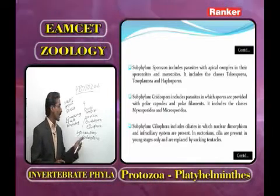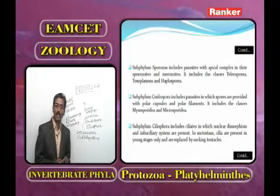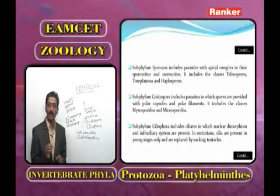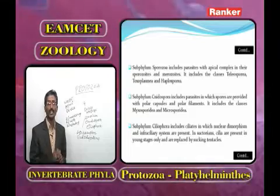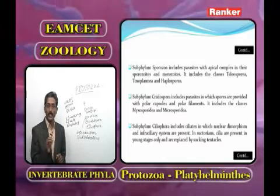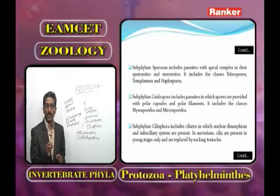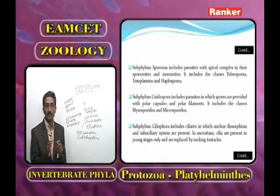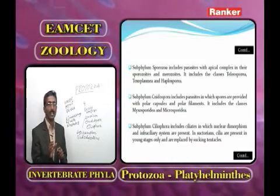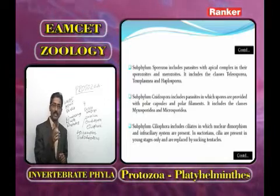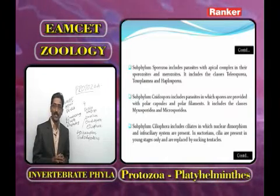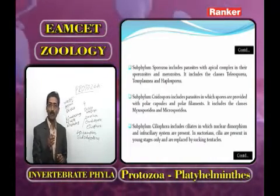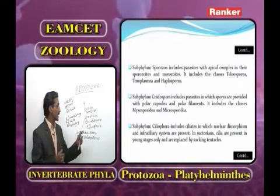The last class under Sporozoa is Haplosporea. In Haplosporea, the spores are amoeboid in shape. The best example is Haplosporidium.